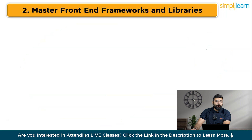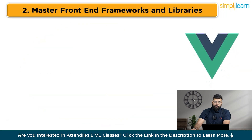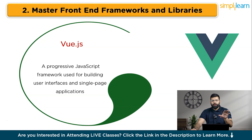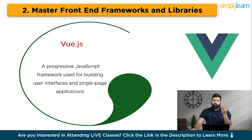Then comes Angular — a platform and framework for building single-page client applications using HTML and TypeScript. And then we have Vue.js, a progressive JavaScript framework used for building user interfaces and single-page applications. To learn React, start by understanding core concepts such as components, JSX, state, and props, and build a simple application like a to-do list or a weather app. For Angular, explore core features such as modules, components, services, and dependency injection, and create a simple project like a task manager or data dashboard. For Vue.js, get familiar with its reactivity system, directives, and components, and develop a small application like a note-taking app.